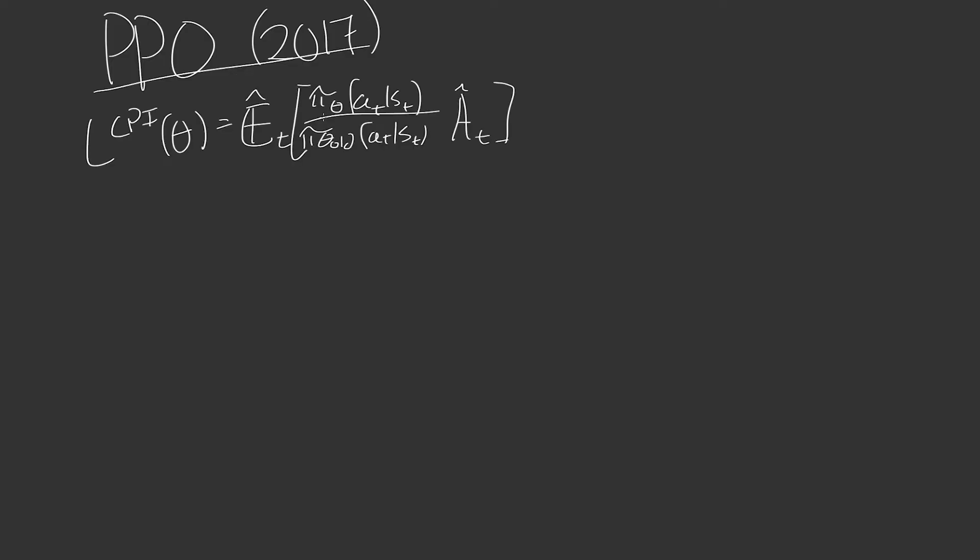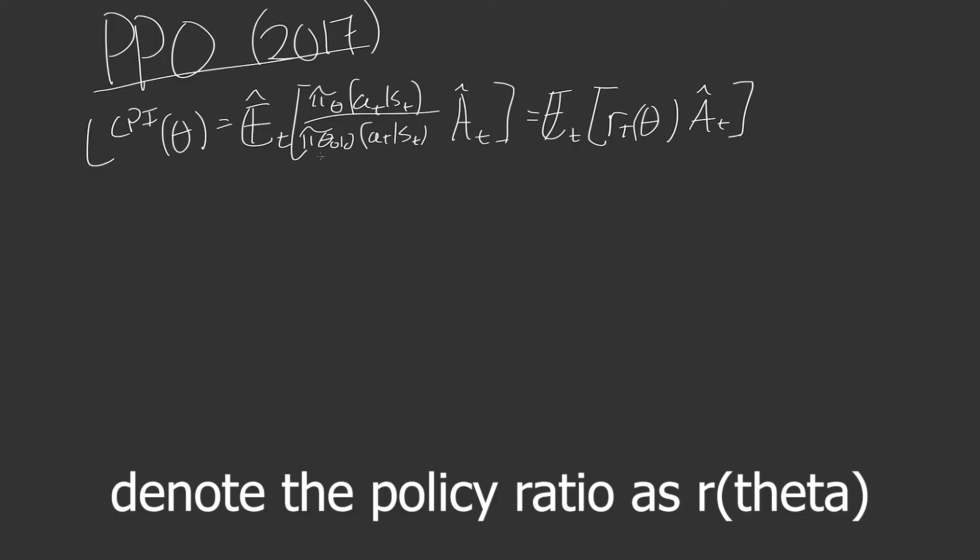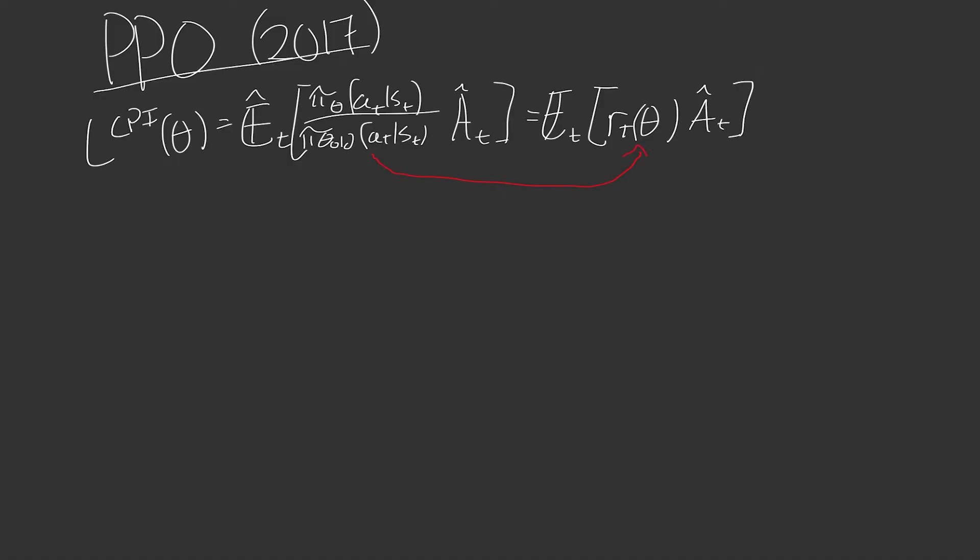So the first term we want to look at, and this is the main primary objective, is this right here. This term right here. This is the main thing we want to look at. So we want to maximize this. What is it we're maximizing? So it's the expected. First, we have this term right here. We have the policy over policy with the old parameter.